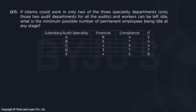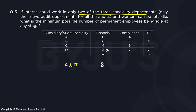Question number 15: If interns could work in only two of the three speciality departments for all audits and workers can be left idle, what is the minimum possible number of permanent employees being idle at any stage? Again, which two departments are not specified, so we take cases. If interns work in compliance and IT, minimum eight permanent employees work in financial. In the case of subsidiary D, five are idle.